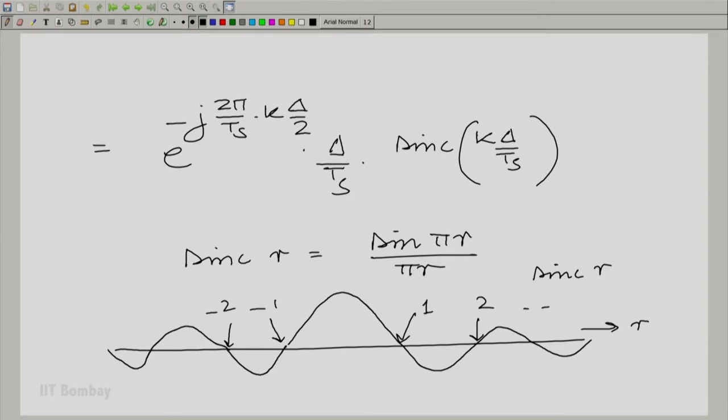Remember that sinc of r is essentially sin(πr)/(πr) and you can sketch the sinc function like this. Now observe what is happening. You are essentially taking many samples of the sinc function. By the way, I leave it to you to show that c_0 is essentially the limit of this as k tends to 0. It is very easy to show. In fact, you can calculate c_0 separately and you can prove this.